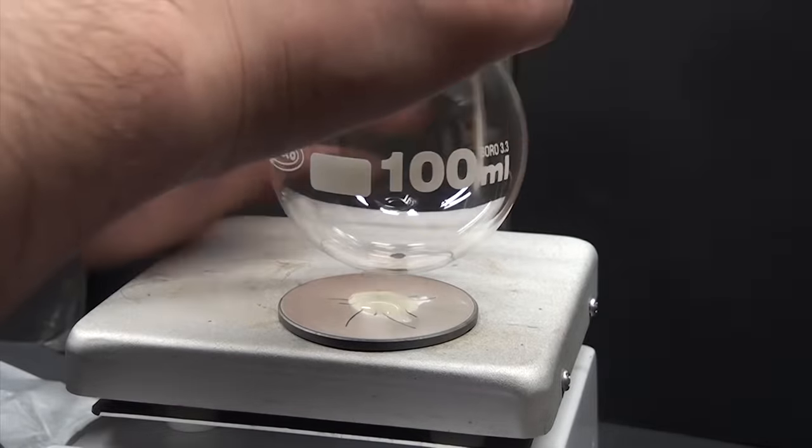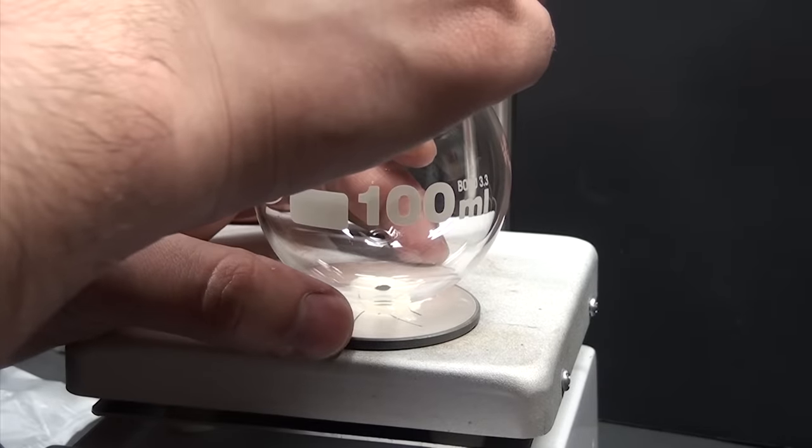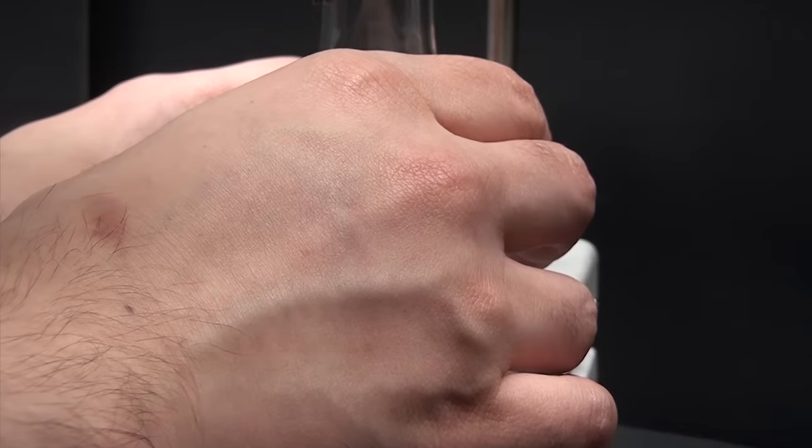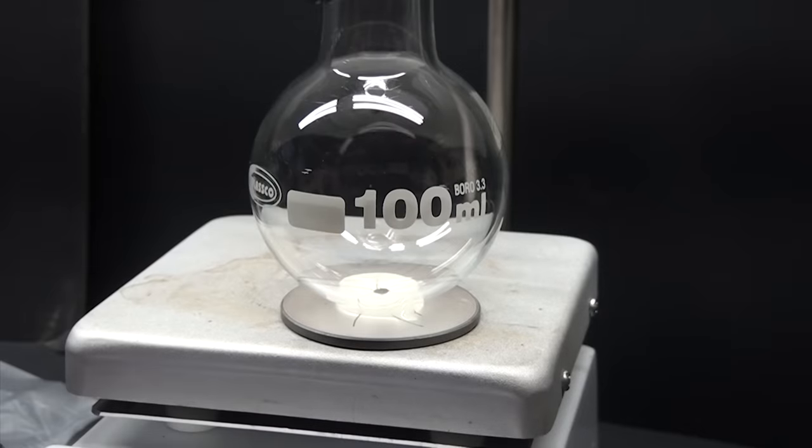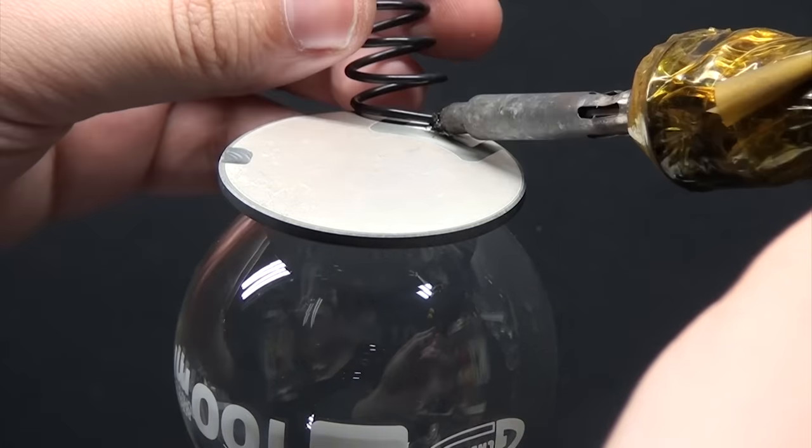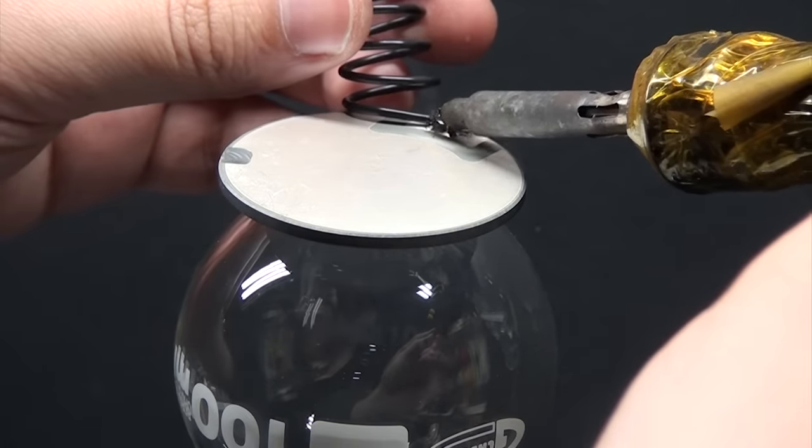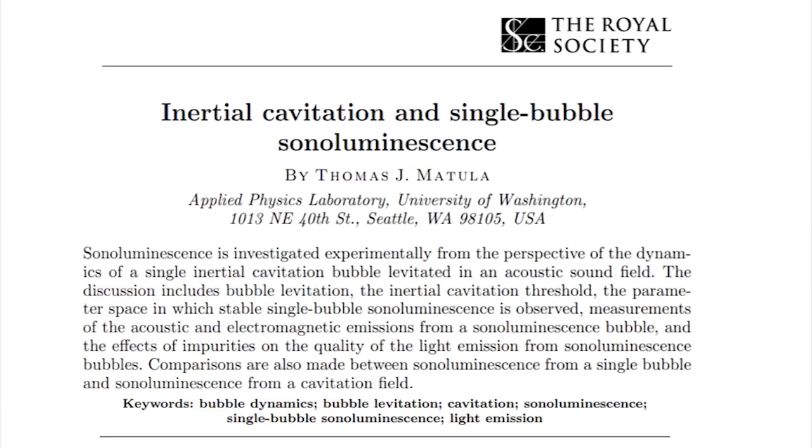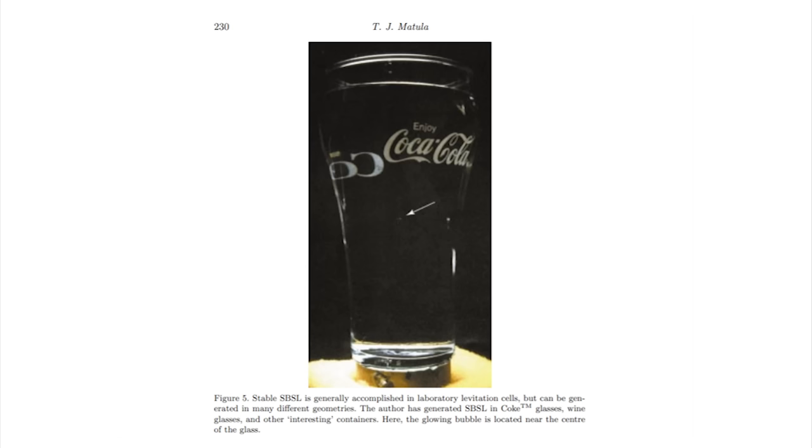Before we actually connect the transducer though, we need to mount it to the flask we're going to be using. I mainly focused on replicating what the papers and tutorials used, so stuck with a 100 milliliter round bottom flask. The transducer was epoxied to the bottom and held in place until it cured. Once the transducer is epoxied on, solder a wire to each of the two electrode pads carefully, and then short the two wires to dissipate any charge that built up from the transducer deforming from heat. However, one of the papers I linked in the description showed that the flask really doesn't matter, and managed functional sonoluminescence in an old school coke glass and even said they managed to make it work in a wine glass.